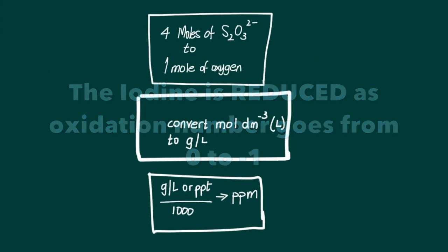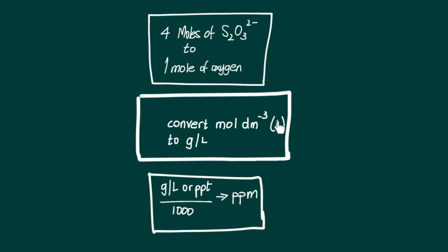Finally we can convert the moles of oxygen per dm³ or per liter to grams per liter, which is the same as saying parts per thousand, and then dividing by a thousand we can convert parts per thousand into a final answer of parts per million, and this is the most commonly used unit for expressing the levels of dissolved oxygen in water samples.